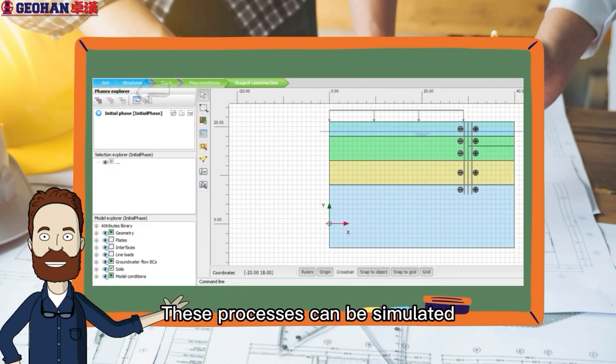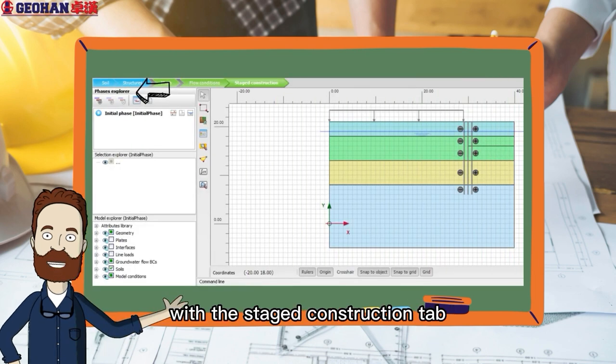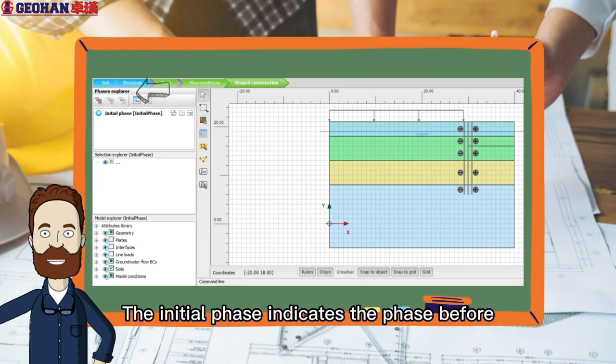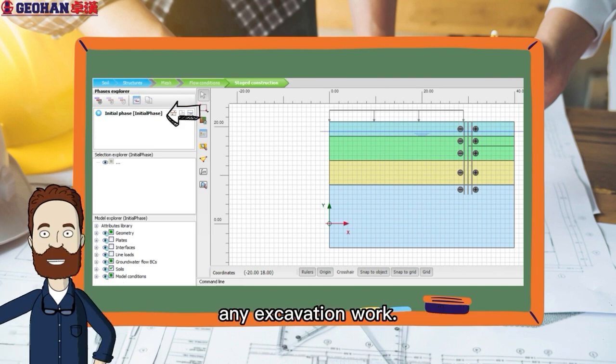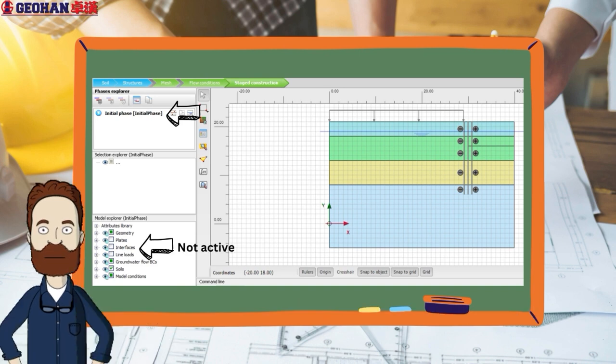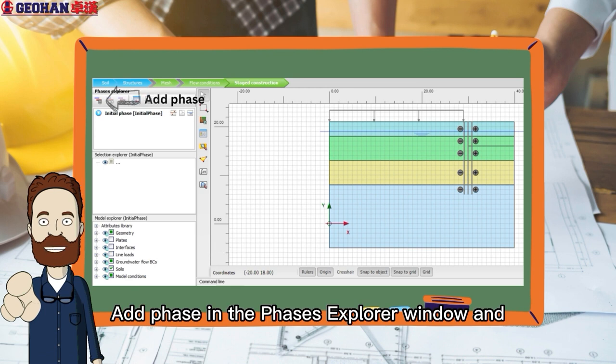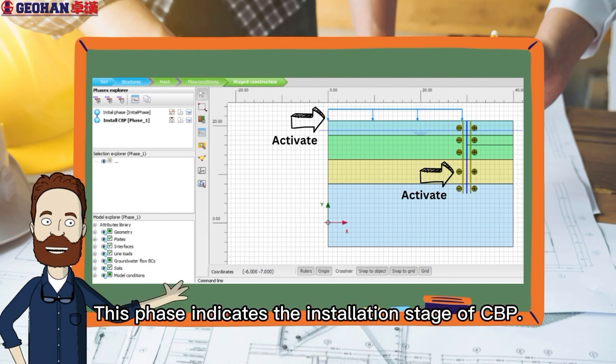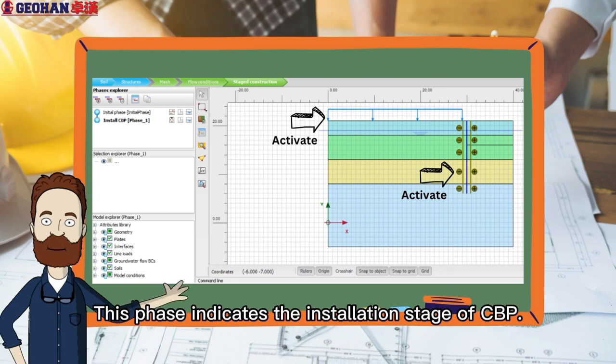These processes can be simulated with the staged construction tab by using the Phases Explorer window. The initial phase indicates the phase before any excavation work. Therefore, the plate, interfaces, and load are not active. Add phase in the Phases Explorer window and activate the plate, interfaces, and load. This phase indicates the installation stage of CBP.